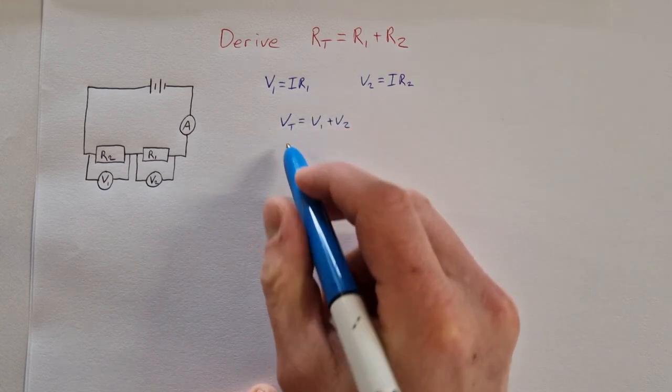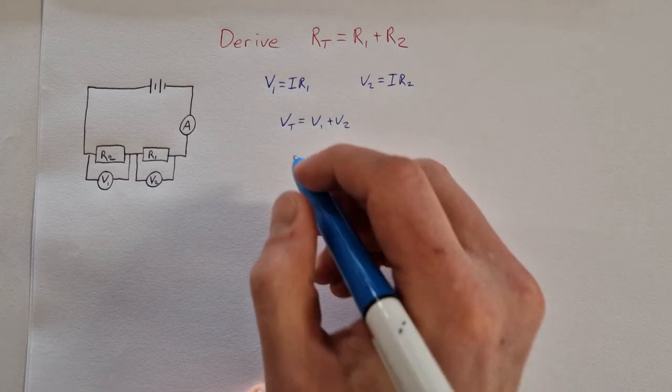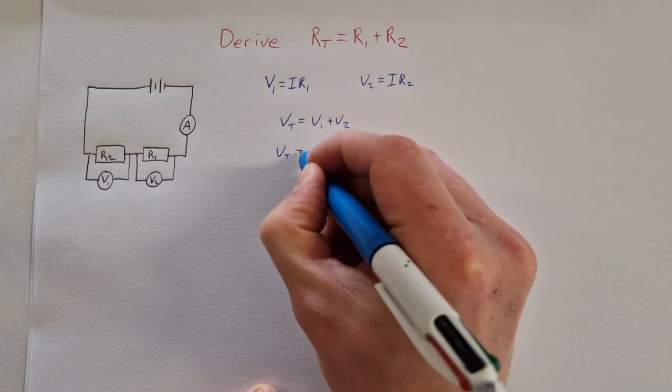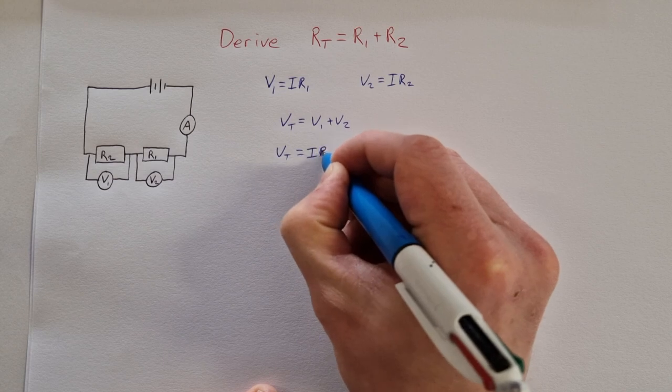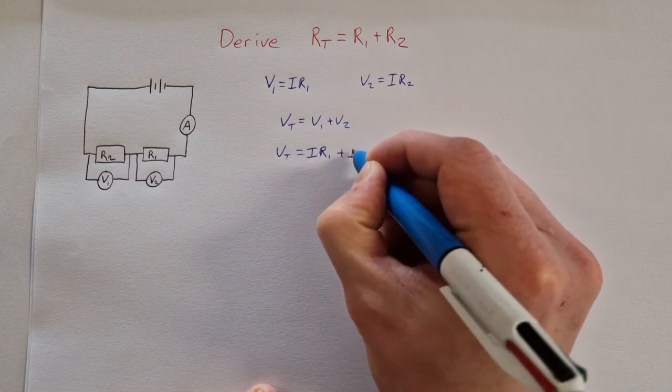I can then replace V1 with IR1 and V2 with IR2, so Vt = IR1 + IR2.